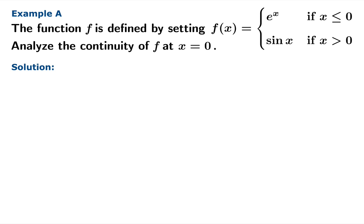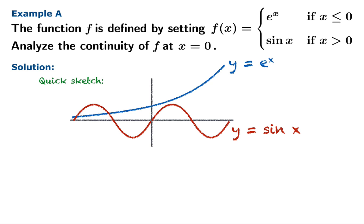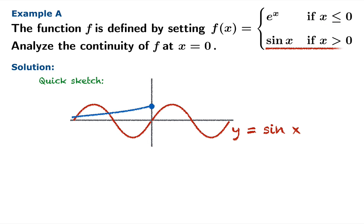Before we launch into a solution, let's get a quick sketch of what's going on. The component functions are the exponential and the sine function, but we have to snap these graphs off at the transition point at x equals zero. Because we use e to the x when x is less than or equal to zero, we get rid of the stuff to the right of the origin — notice we fill in the dot since x equals zero uses e to the x. For positive x we use sine, so we keep only that piece to the right, giving our rough sketch of f.